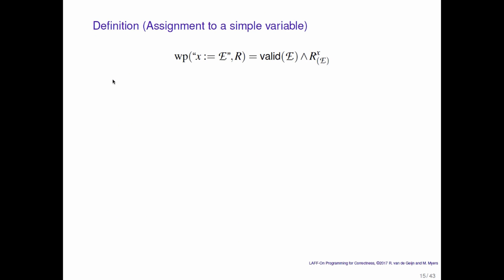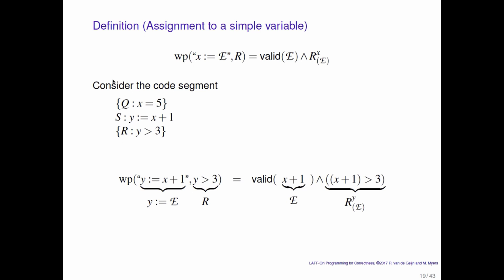So here we've repeated that. And let's now use that with the code segment that we discussed earlier. Let's look at the weakest precondition of y being replaced by the expression x plus 1, leaving you in a state where y is greater than 3. And instead of doing this informally, we're now going to do this formally. So here let's first identify what the expression e is. It is the expression x plus 1. And let's clearly identify what the postcondition r is.